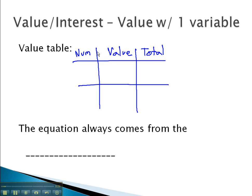In order to calculate the total amount, we take the number of things times the value they have, and that will always equal our total. We will then be able to create an equation from the last column.